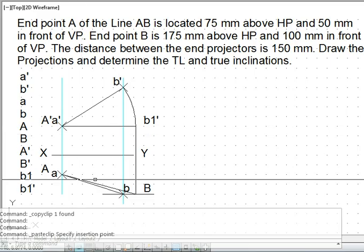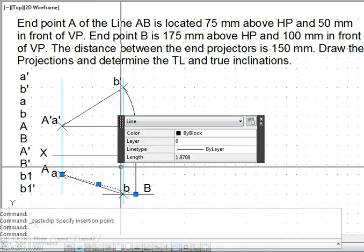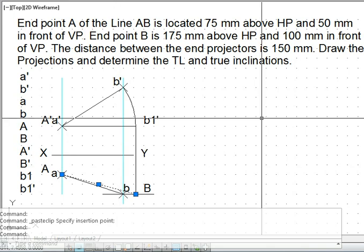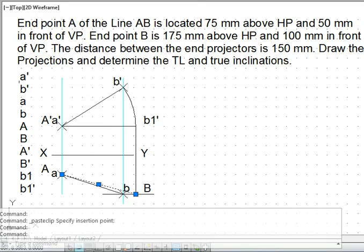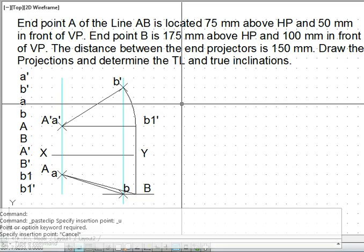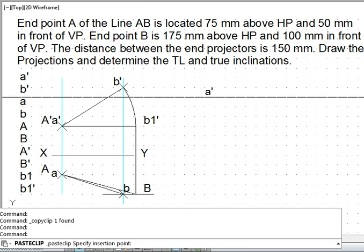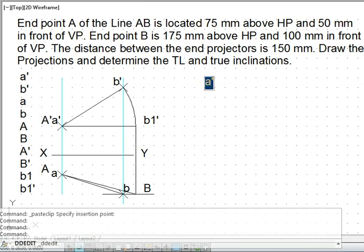This true length of the line is 1.8708 AutoCAD units. Using this we can find out the true length. So this is 187.08 mm. We give this answer here: true length equal to AB, it is also equal to A dash B1 dash.